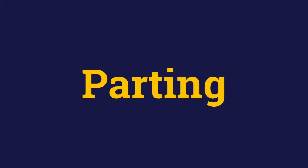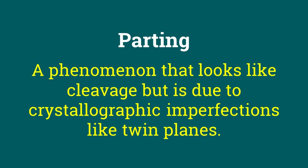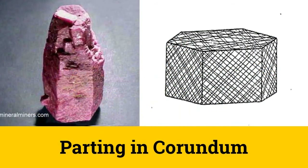Apart from cleavage, some minerals show parting. This phenomenon looks like cleavage, but it is not cleavage. Parting is due to crystallographic imperfections, such as twin planes, and not due to weakness of atomic structure. Parting will not be present in all specimens of a particular mineral, but only in those with imperfections. Parting surfaces are usually less smooth than cleavage planes, as seen in this image of corundum. This property makes corundum relatively softer, as it easily breaks along parting planes.